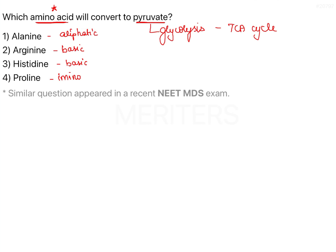The question is about the conversion of amino acids into pyruvate. This is possible by means of transamination reactions catalyzed by transaminases.